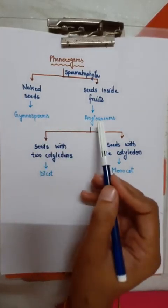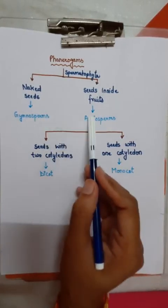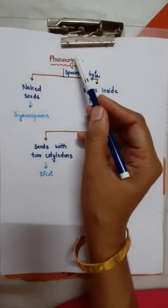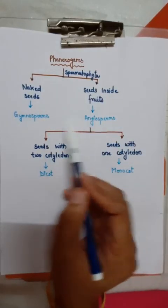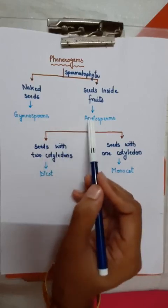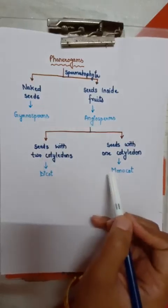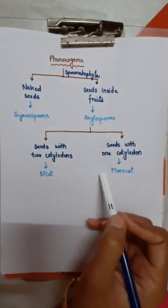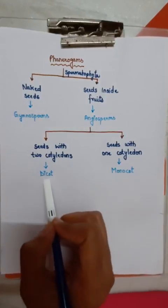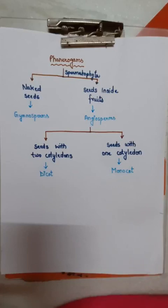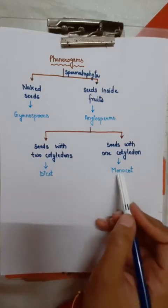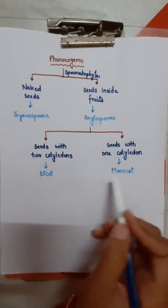So Gymnosperms and Angiosperms are subdivisions of Spermatophyta. Dicotyledons and Monocotyledons are the two classes. To recap the hierarchy: Kingdom, then Division, then Subdivision, and then Class. Dicotyledonae and Monocotyledonae are the two classes of Angiosperms.